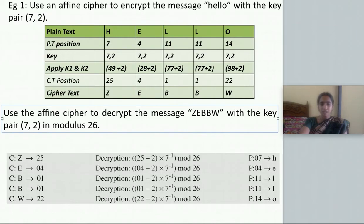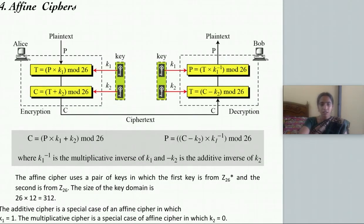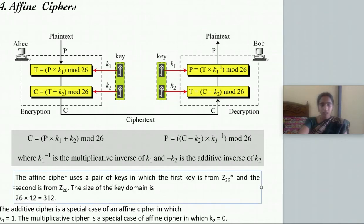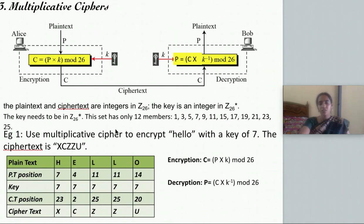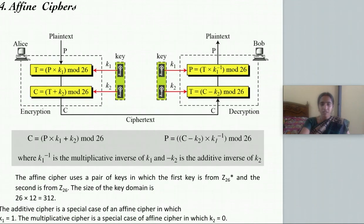One important thing with affine cipher: in the decryption process, you need to take K1 inverse, which must also lie within Z26. Therefore, the key K1 you choose must be only from this set of 12 values: 1, 3, 5, 7, 9, 11, 19, 21, 23, 25. Only these numbers have their inverses in Z26. When choosing the key, it must lie within this set. The decryption process for affine cipher is beyond this scope. Thank you.